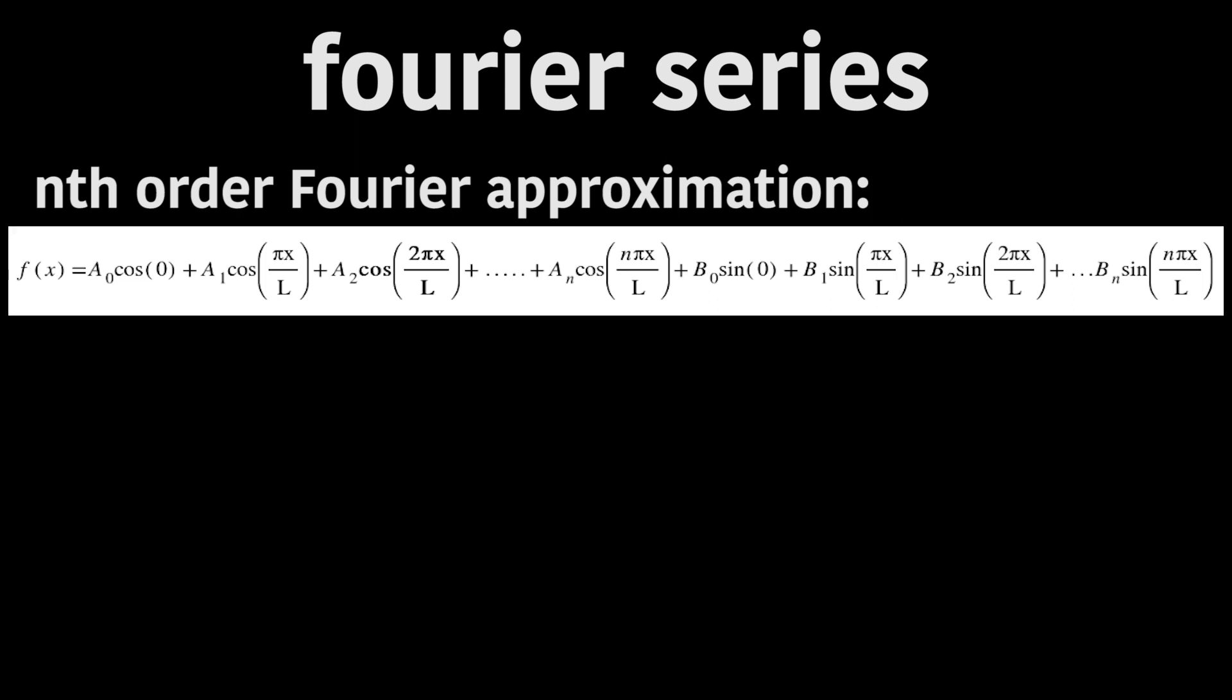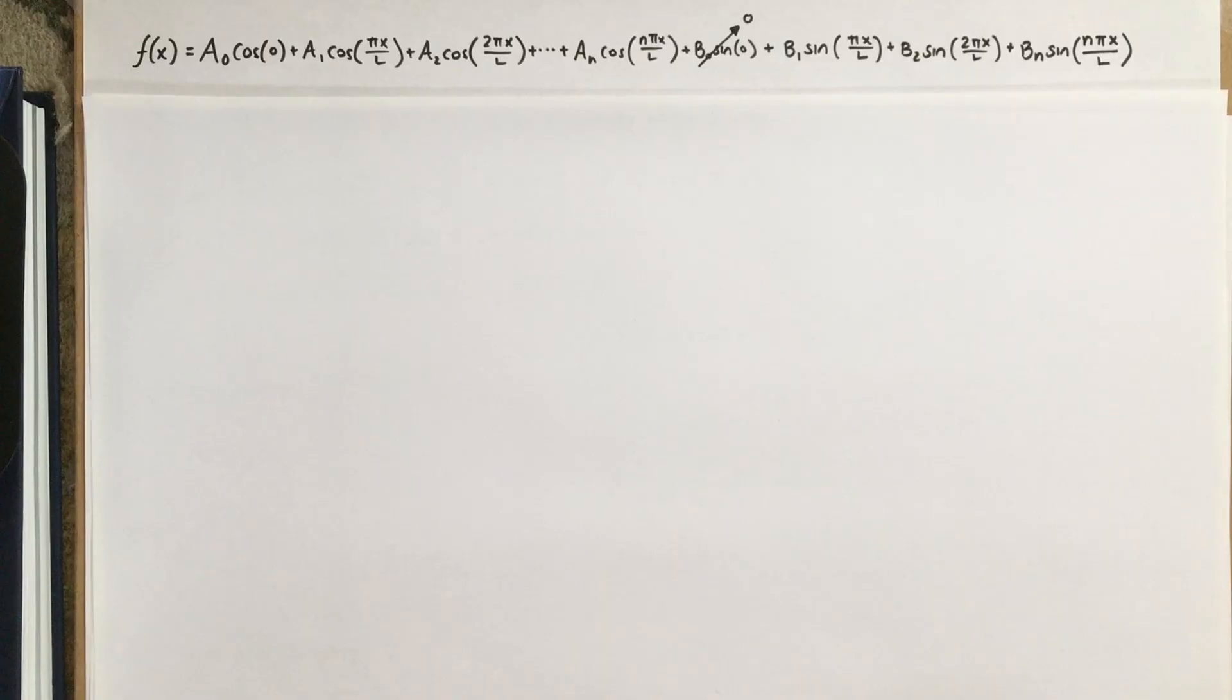Assuming we find all the right a and b values. So, how do we calculate those? Ben, do you know? I do have the answer.